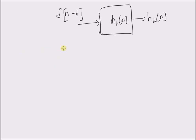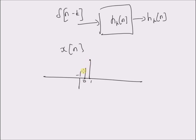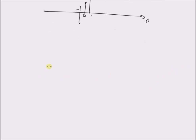Given the following input x(n), which has only three non-zero values: at n equal to minus 1, n equal to 0, and n equal to 1. So it has only three values, one at minus 1, 0, and 1.